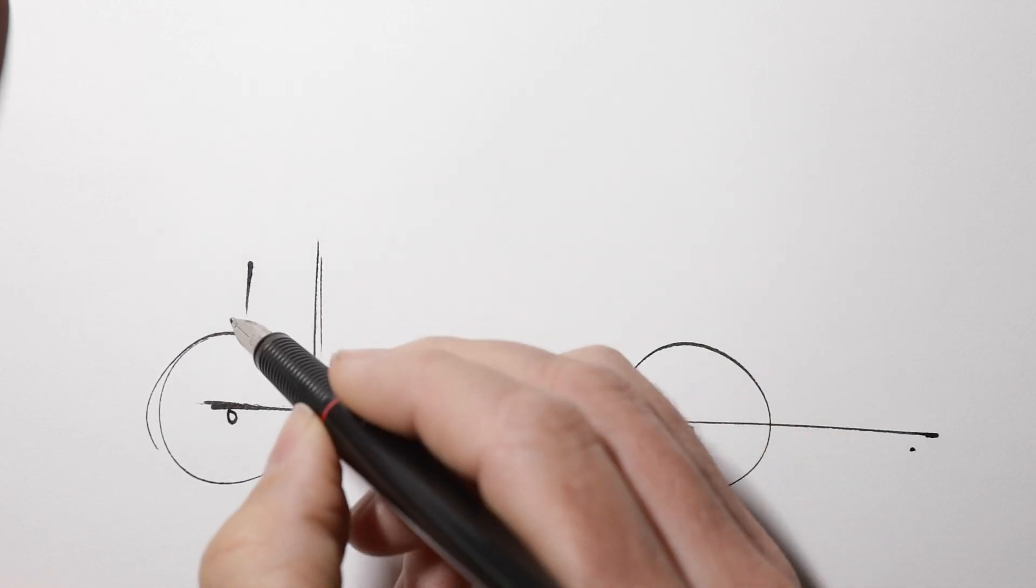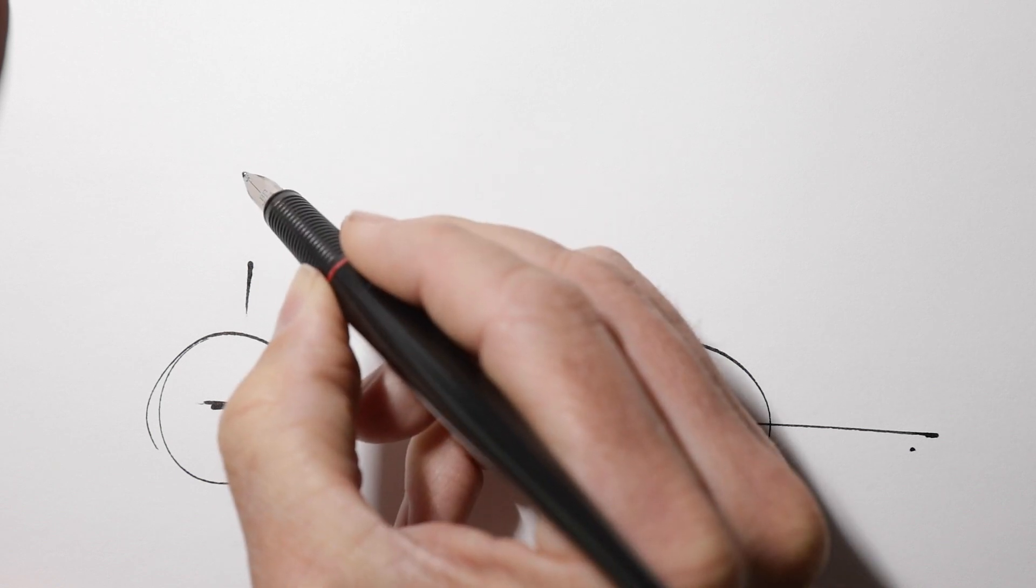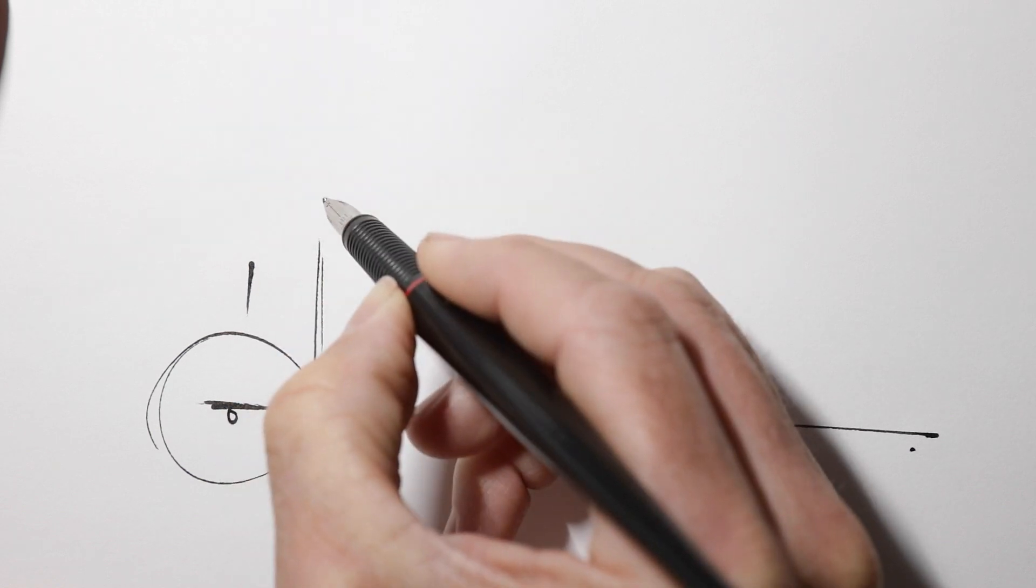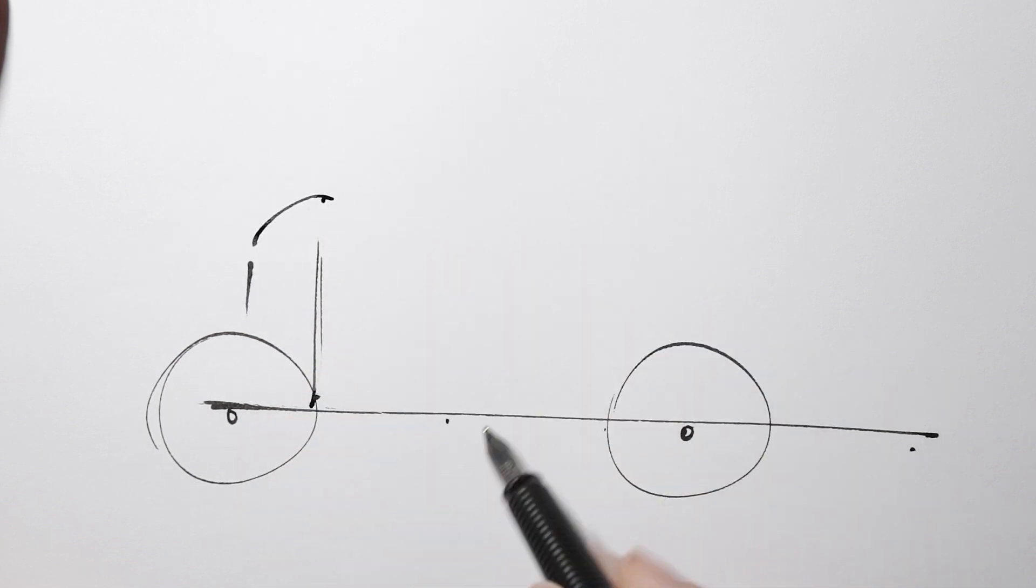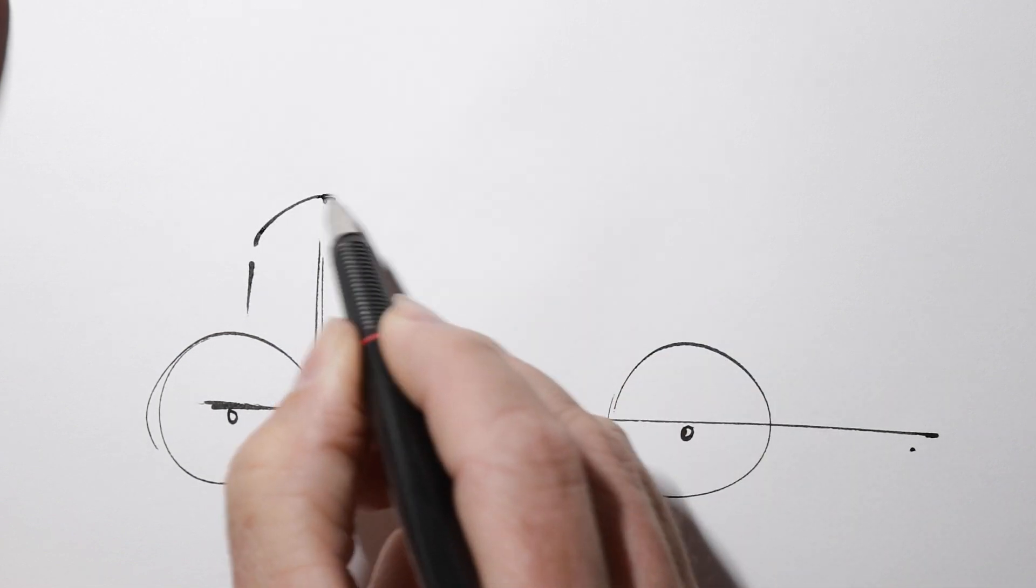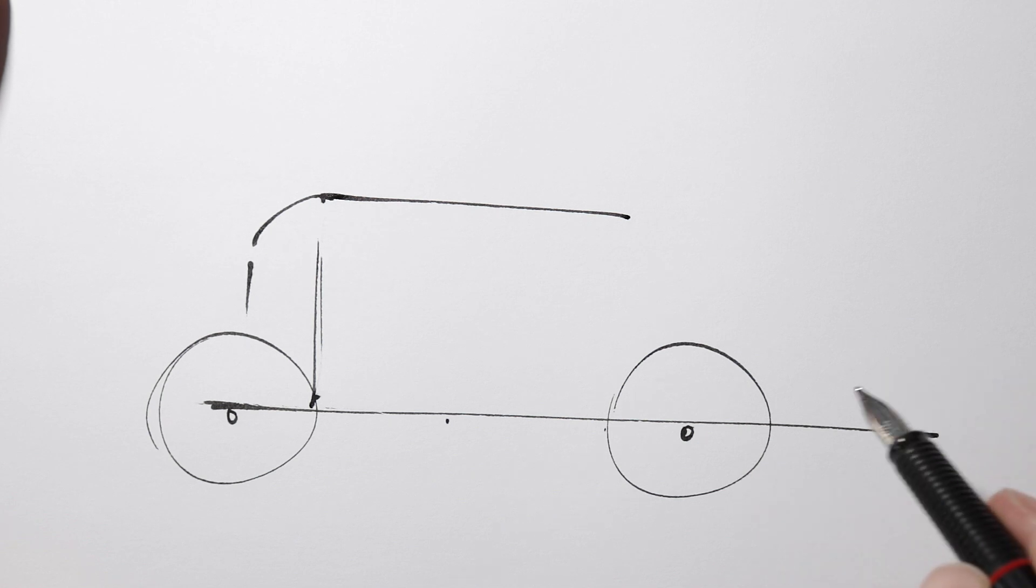And for the height of the car we're going to measure one wheel up, just slightly less than that, and make an arc. And from that point we can go horizontally back. We've got the top of our car.